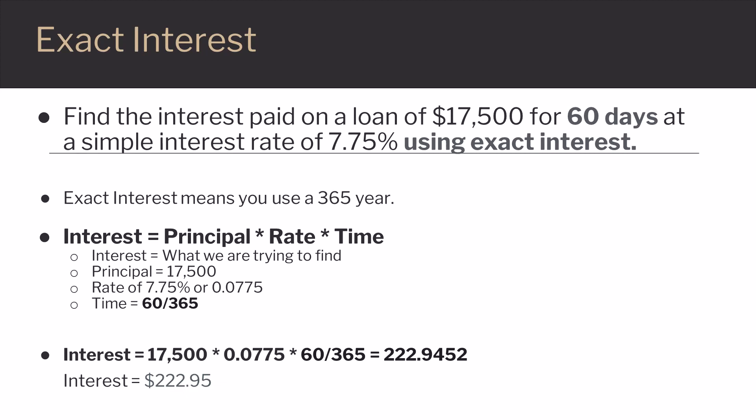The first is called exact interest. With exact interest, you use a 365-day year. Using the formula Interest equals Principal times Rate times Time, we plug in the same values for principal and rate, but for time we now have 60 days. Since this is exact interest, we take 60 divided by 365 and plug that in for time. Our calculation is 17,500 times 0.0775 times 60 divided by 365, which equals $222.95 rounded to the nearest cent.